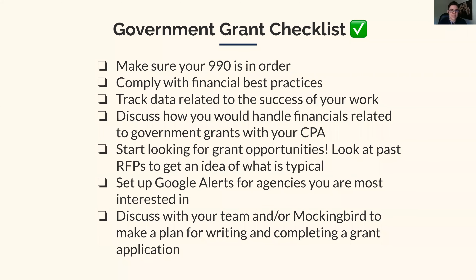Let's talk next steps. We've got this great government grant checklist. Make sure your 990 is in order and you are complying with financial best practices — this is crucial for government grants. Make sure you are tracking data related to the success of your work. You want firm, concrete data you can look at. Discuss how you'd handle financials with your CPA, start looking for grant opportunities, and especially look at past RFPs to get a sense of what has happened. Set up Google alerts — that's super helpful. And discuss with your team or with Mockingbird how to make a plan for writing and completing a grant application.